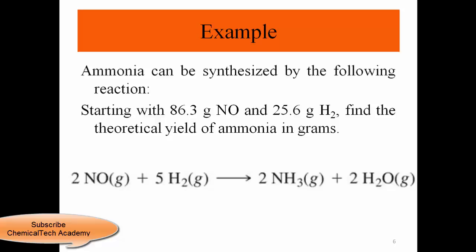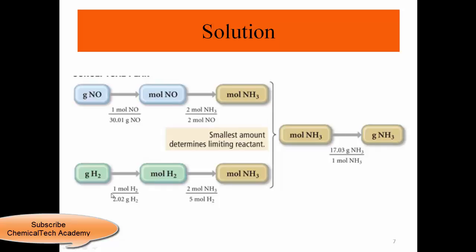Next example: ammonia can be synthesized by the following reaction. Starting with 86.3 grams of NO and 25.6 grams of hydrogen, find the theoretical yield of ammonia in grams. NO and H₂ react to produce ammonia and water. The molar ratio is 2 moles NO plus 5 moles H₂ produces 2 moles of ammonia.